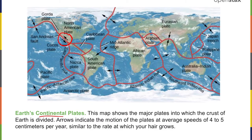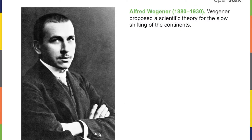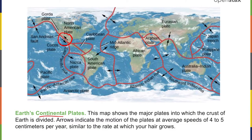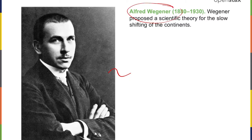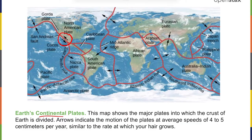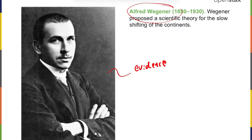Plate tectonics is a very special feature of the crust moving about. Alfred Wegener proposed the idea based on fossil evidence and the shape of the continents — a compelling and ultimately correct idea. He offered a list of evidence showing the plates had moved over time, but never introduced a mechanism for how they moved. He did not understand that the liquid mantle was the mechanism. Once that was explained, the theory of plate tectonics was accepted, though Wegener had died before that happened.